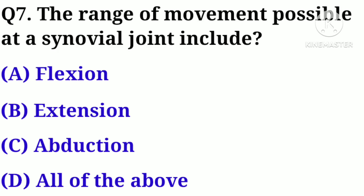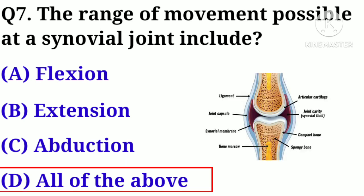Q7. The range of movement possible at a synovial joint includes: A. Flexion, B. Extension, C. Abduction, D. All of the above. Answer: D. All of the above.